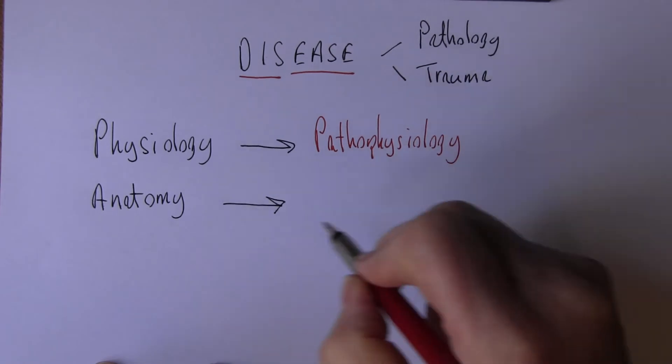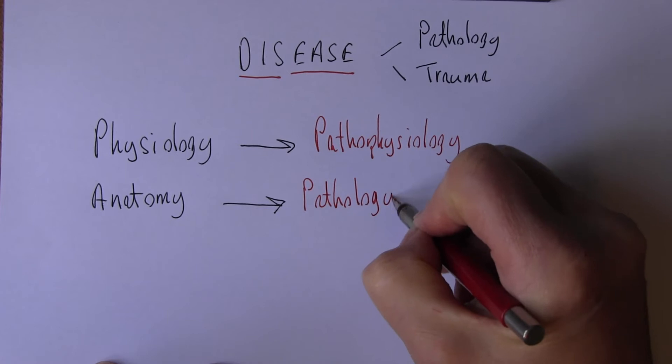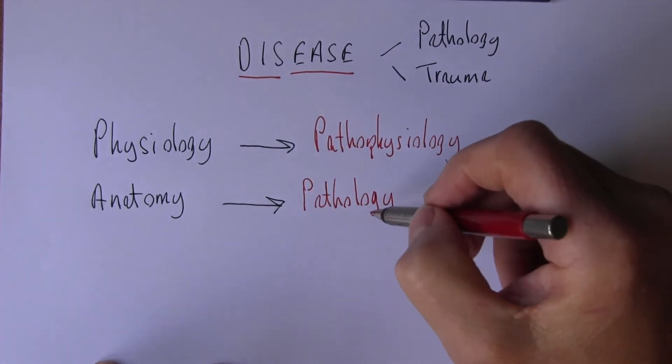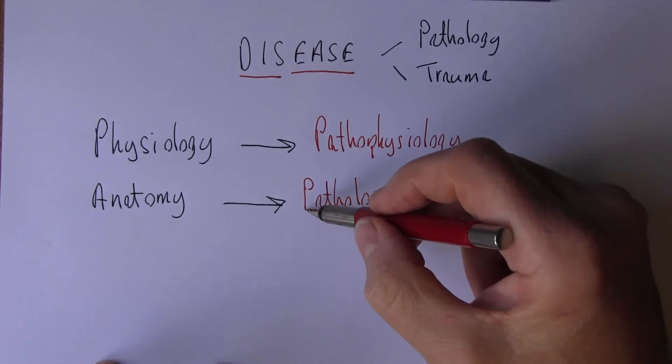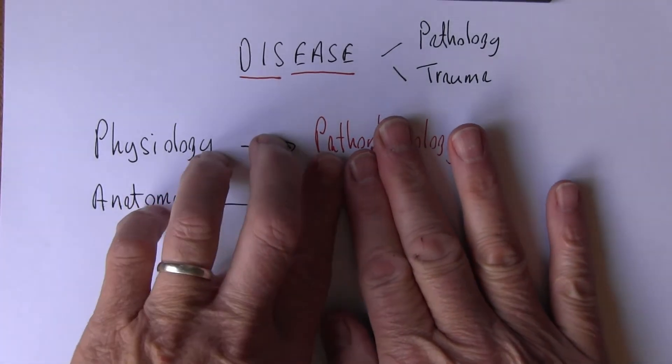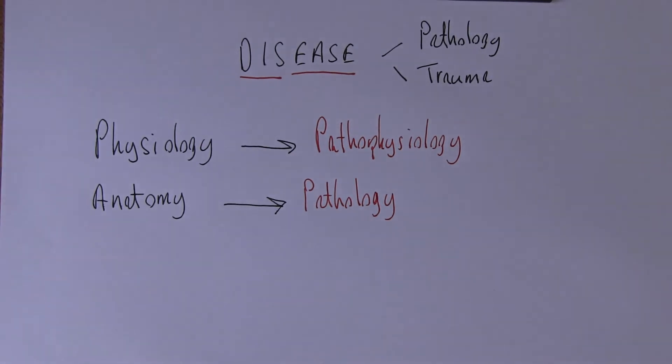When anatomy goes wrong we call that pathology. Path means disease. Pathology is the study of disease. Pathophysiology is the study of abnormal disease processes.